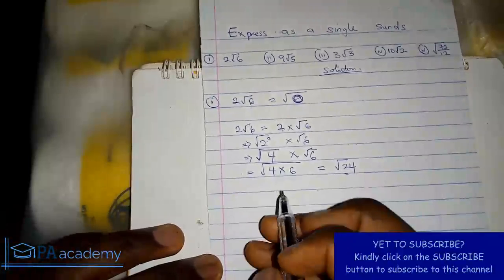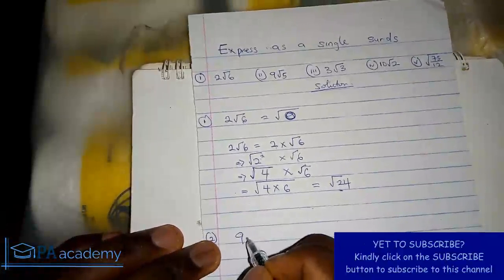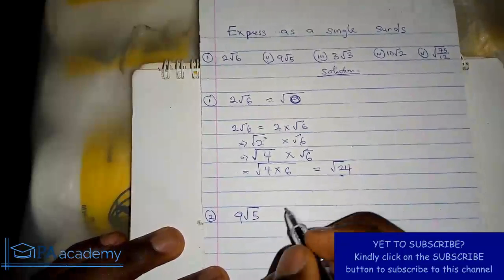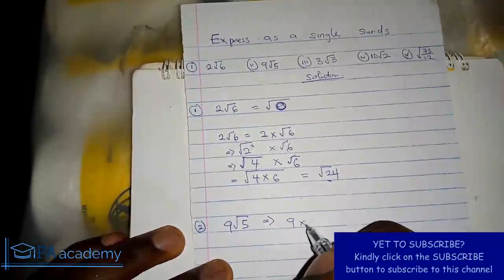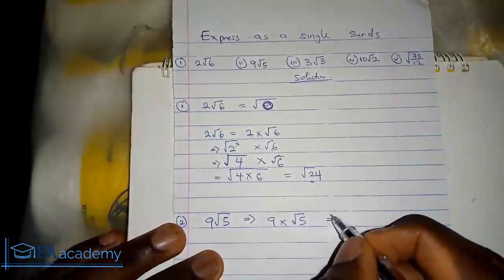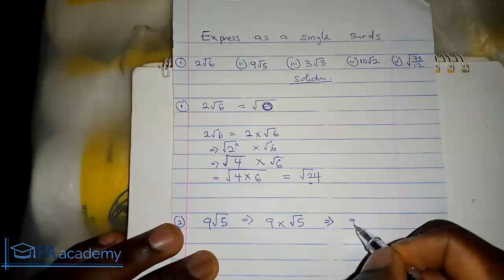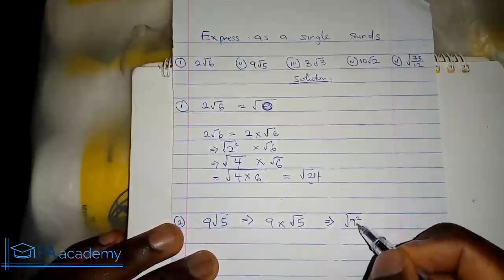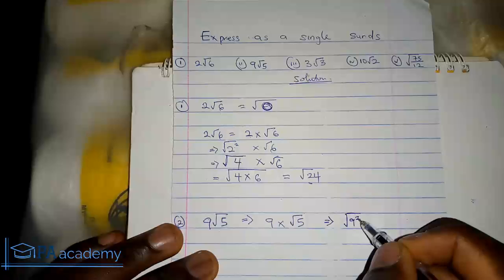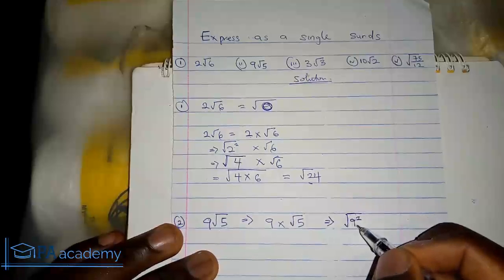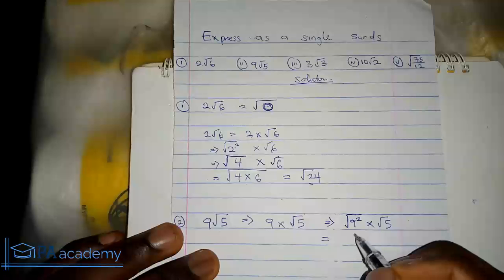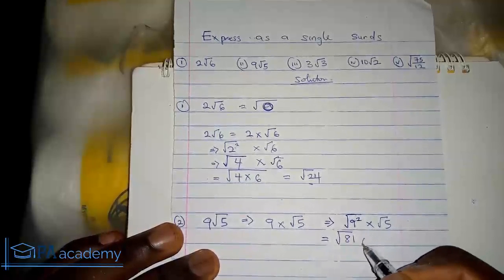For Example 2, we have 9√5. We write it as 9 times √5. We rewrite the 9 as √(9²). Now 9 raised to the power 2 is 81, so we have √81 times √5.